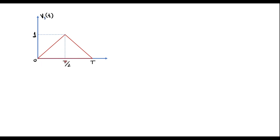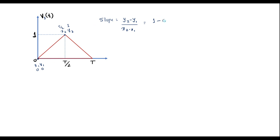We can observe that from 0 to T/2 we have a rising ramp signal, and from T/2 to T there is a falling ramp. The slope can be calculated as (y2 - y1) / (x2 - x1). The coordinates at the first point are (0, 0) and at the second point x2 = T/2 and y2 = 1. Substituting: (1 - 0) / (T/2 - 0) = 2/T. So the slope of this signal is 2/T.